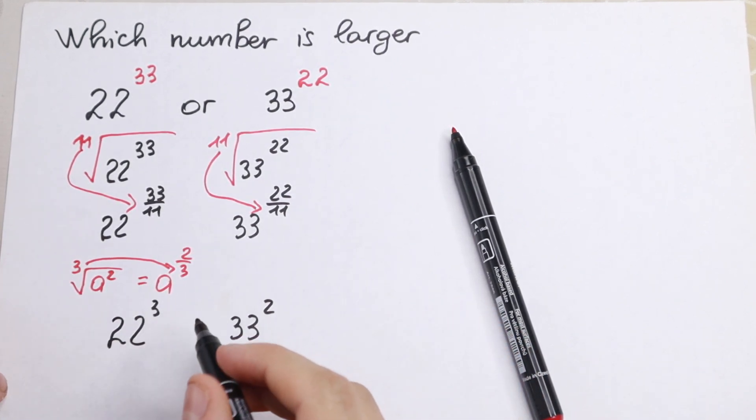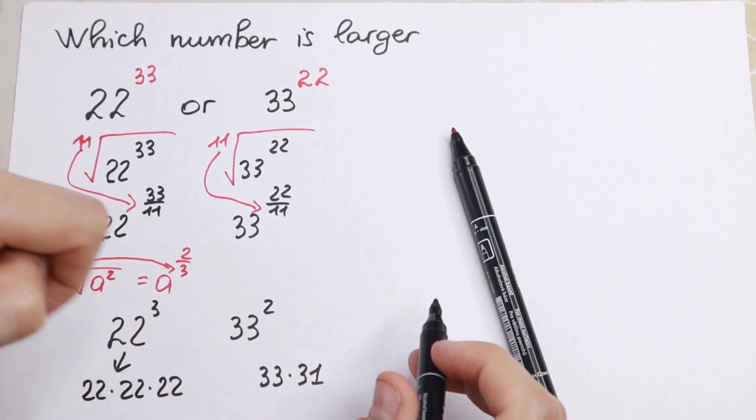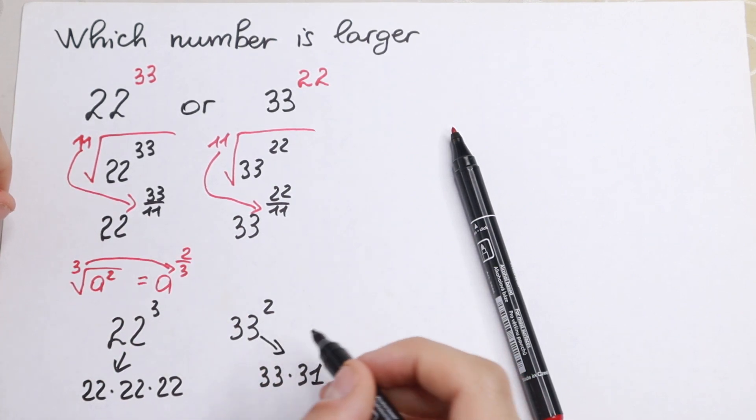So let's write 22 cubed as 22 times 22 times 22, and 33 squared as 33 times 33. So we just raise this to the third power and to the second power. What we're going to do next? Take a look.